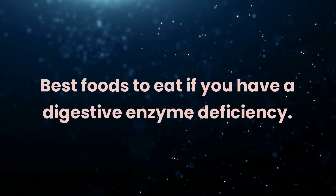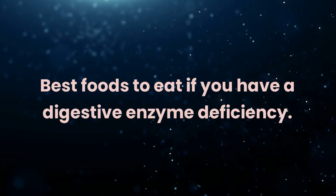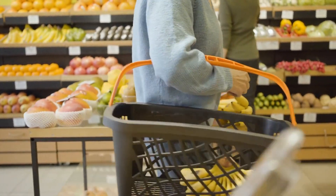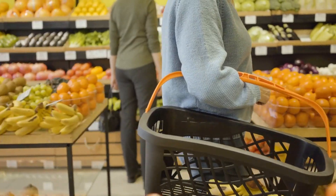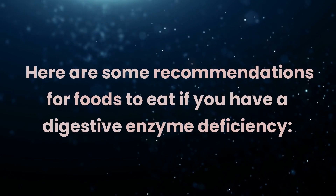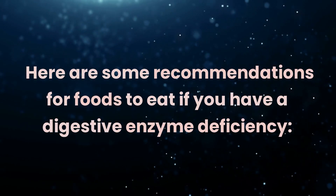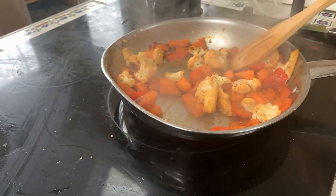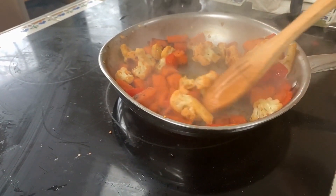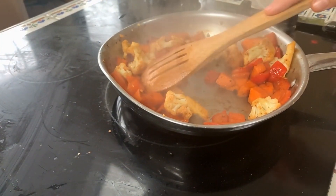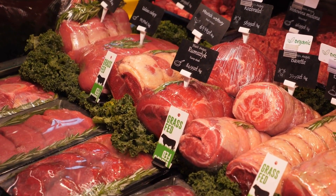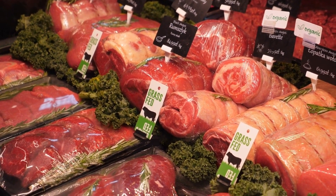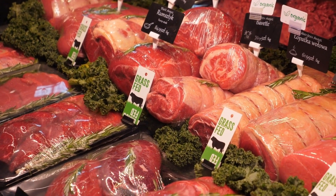Best foods to eat if you have a digestive enzyme deficiency. If you have a digestive enzyme deficiency, it's important to choose foods that are easier to digest and less likely to cause gastrointestinal distress. Recommendations include cooked fruits and vegetables — steamed, boiled, or roasted vegetables and fruits, which are easier to digest due to the breakdown of some fibers and cell structures. Also consider lean proteins — easily digestible protein sources such as chicken, turkey, fish, tofu, or eggs, while avoiding high-fat meats.